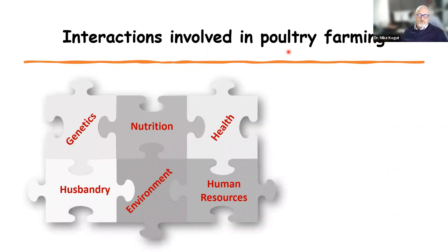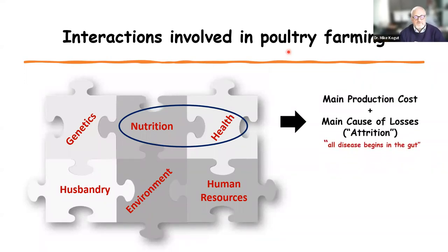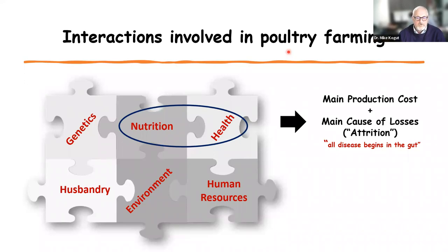Since this is a poultry science webinar, we're all aware of the different parts of growing a chicken and how they interact. When discussing the gut and the costs involved with growing an animal, we really concentrate on two areas: the nutrition and diet of the animal, and the health of the animal. Nutrition is the main production cost — finding dietary components, valuing them, and getting them into the barn is a costly operation. Everyone that has listened to a talk on gut health has heard the quote from Hippocrates that all disease begins in the gut. If the disease didn't start in the gut, it certainly works its way through the gut in manipulating the physiology of the animal.